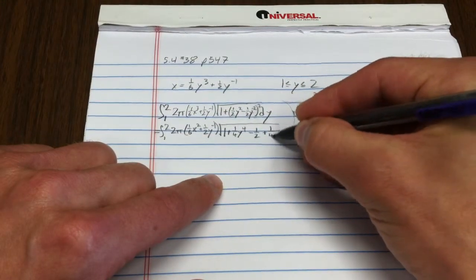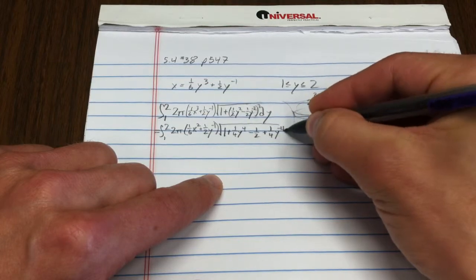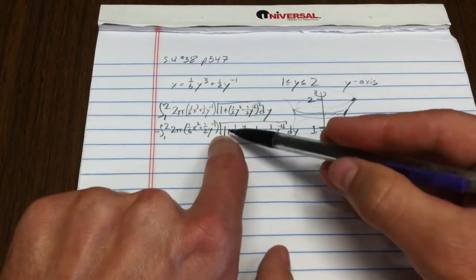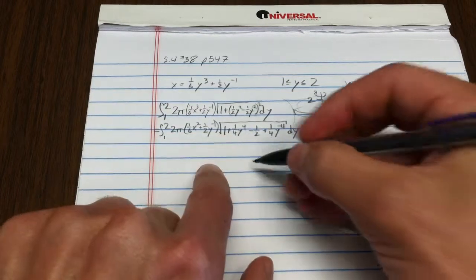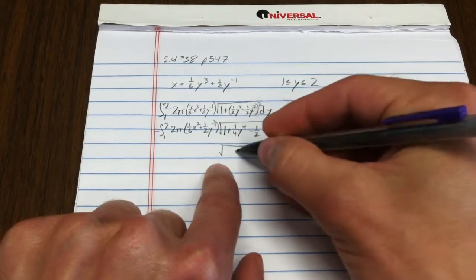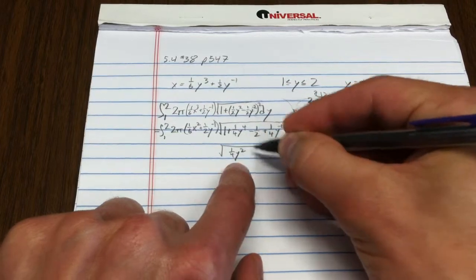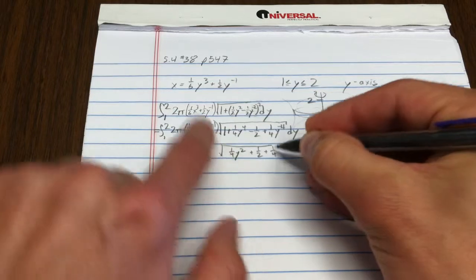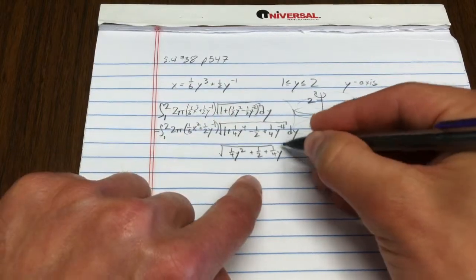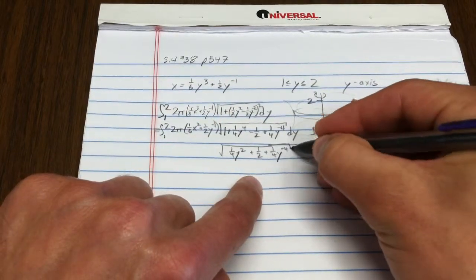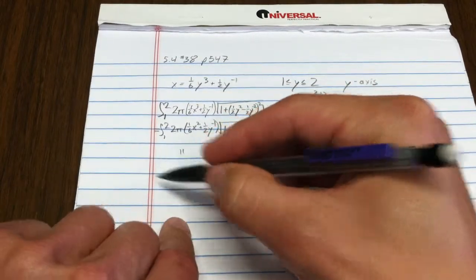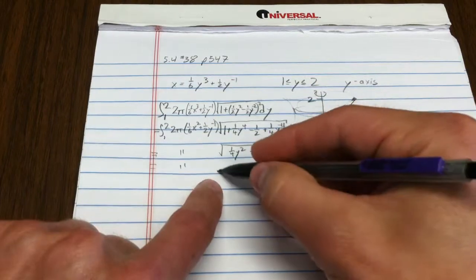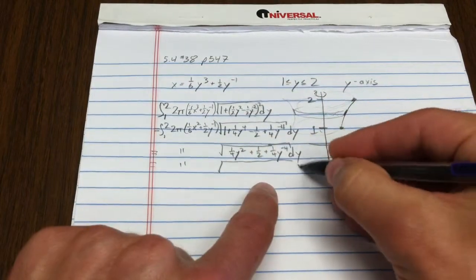Now notice what happens here. I've got one minus a half, so the front stuff doesn't change at all. But if I combine the constant terms, what happens is all that changes is I lose the one and the sign changes in that middle term. So that's the same—it's going to be the same in the next line too.